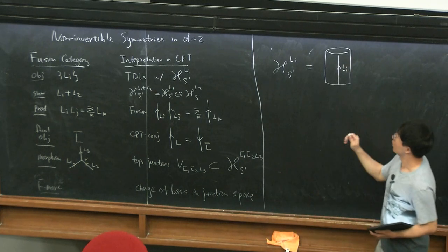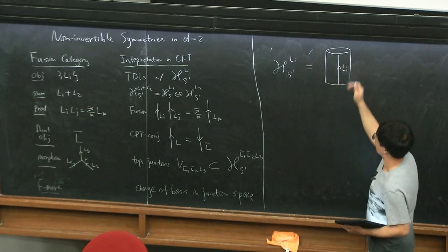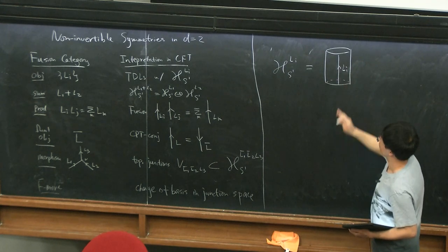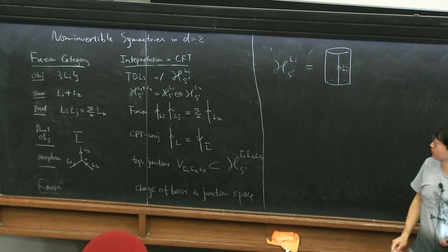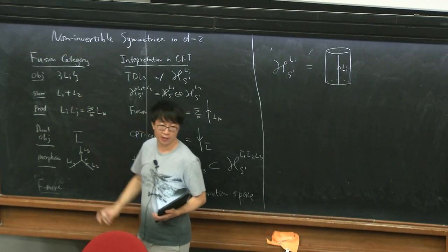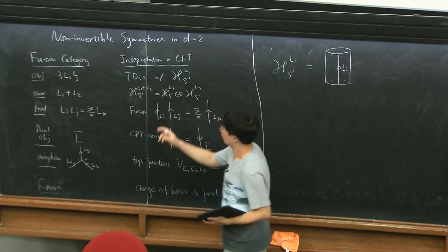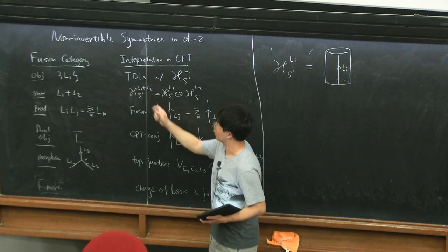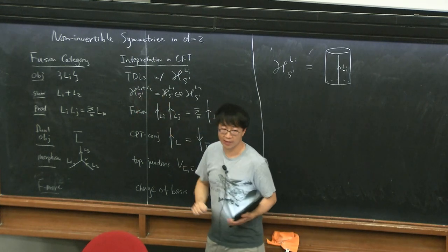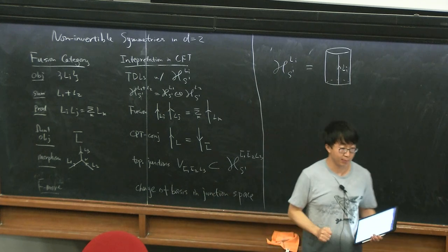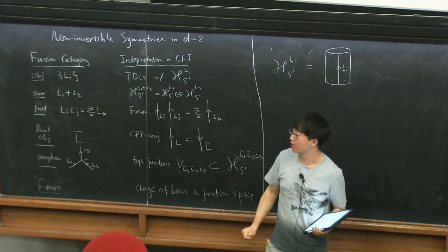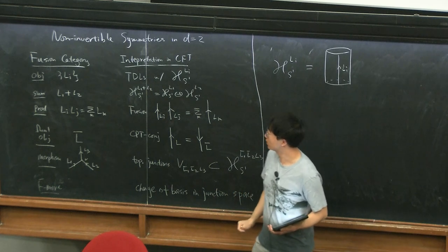On the cylinder, when you quantize — this is the time direction — you quantize on the circle, which is punctured through by the defect line. There is a notion of direct sum in the fusion category, and that boils down to the fact that on the CFT side, a Hilbert space associated with the direct sum of lines splits into the direct sum of the Hilbert spaces associated with the individual constituent lines.